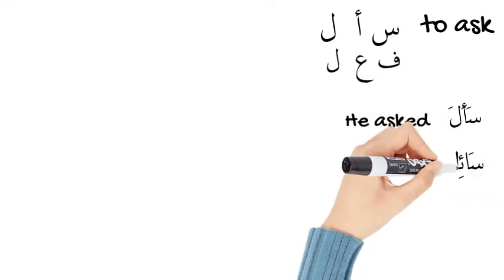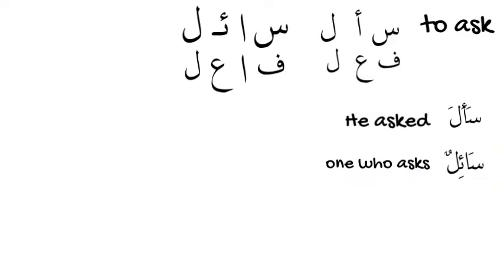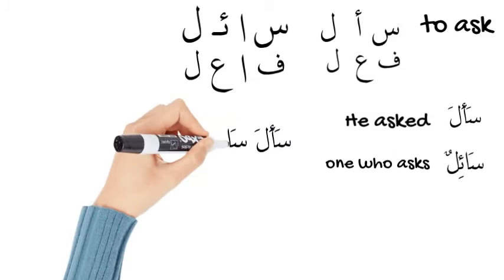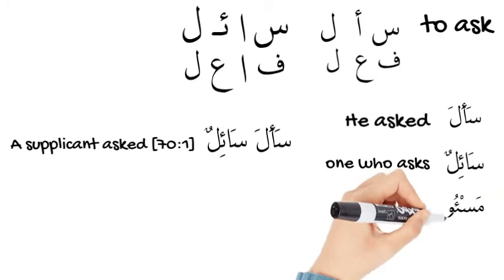And سائل — note that the hamza here is written on a nabra or a kursi, but it is still a hamza. سائل has the same pattern as fa'il, meaning the person who does the verb — the person who does the asking, one who asks. An example for both سأل and سائل is the first ayah of Surah Al-Ma'arij, which starts with سأل سائل, meaning 'a supplicant asked.'